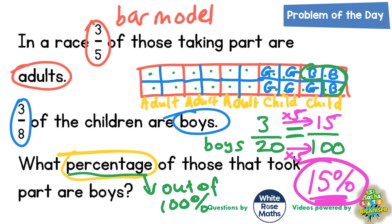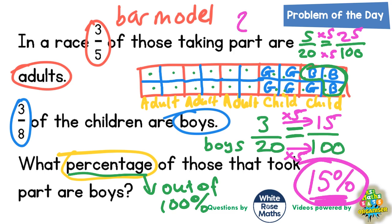We could work out other things as well. The girls would be 5 out of the 20 sections. Again we could make that out of 100 — to get from 20 to 100 is times 5, so we multiply the 5 by 5 as well. 5 times 5 is 25, so girls would actually be 25%.